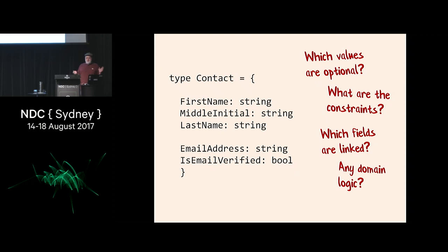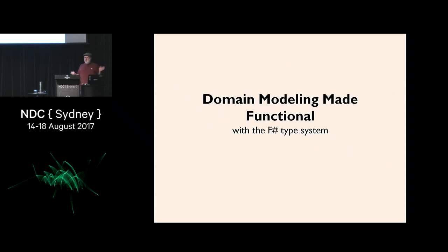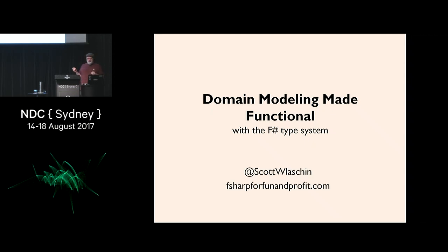So those four things — optional values, constraints, linked fields, and domain logic — we'll see how we can actually encode all of that in the type system. F# can help with all these questions, and most functional languages can too, but I'm going to talk about F# today: domain modeling made functional with the F# type system. I'm Scott Wlaschin, and I have a website, F# for Fun and Profit at fsharpforfunandprofit.com.